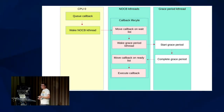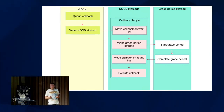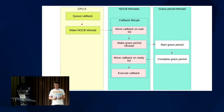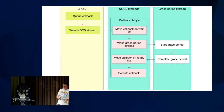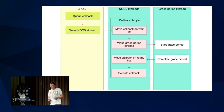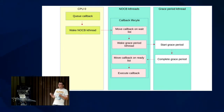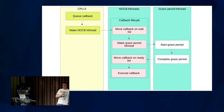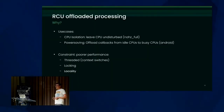CPU zero queues a callback, then wakes a new kind of kthread called the no-CB kthread. That kthread puts the callback on some wait lists, notifies the grace period kthread to start a grace period, waits for it, and then executes the callback. So, what's the point of doing that offloaded lifecycle?